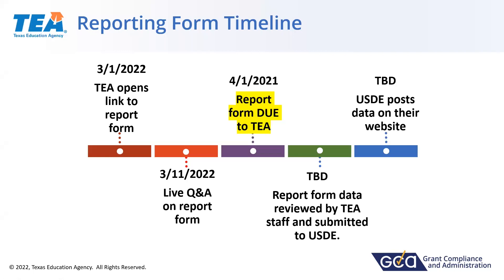Next year's report will hopefully have a slightly different timeline. We expect that the data elements are not going to change, so we'll know what you're reporting and be able to develop a timeline that works better for districts and charters, rather than the compressed timeline you're working under this year. USDE did give us some flexibility — their initial plan had this report due to them in February. They pushed the timeline back about three more months since they haven't finalized all the details, but this first year is going to be a very quick turnaround.